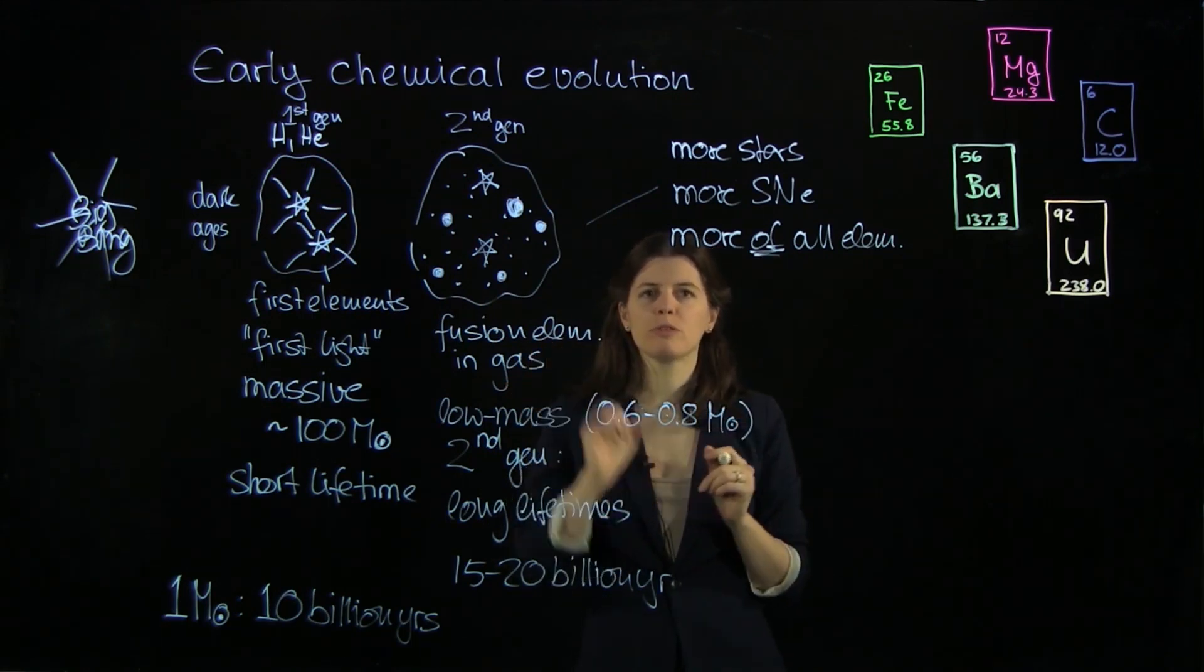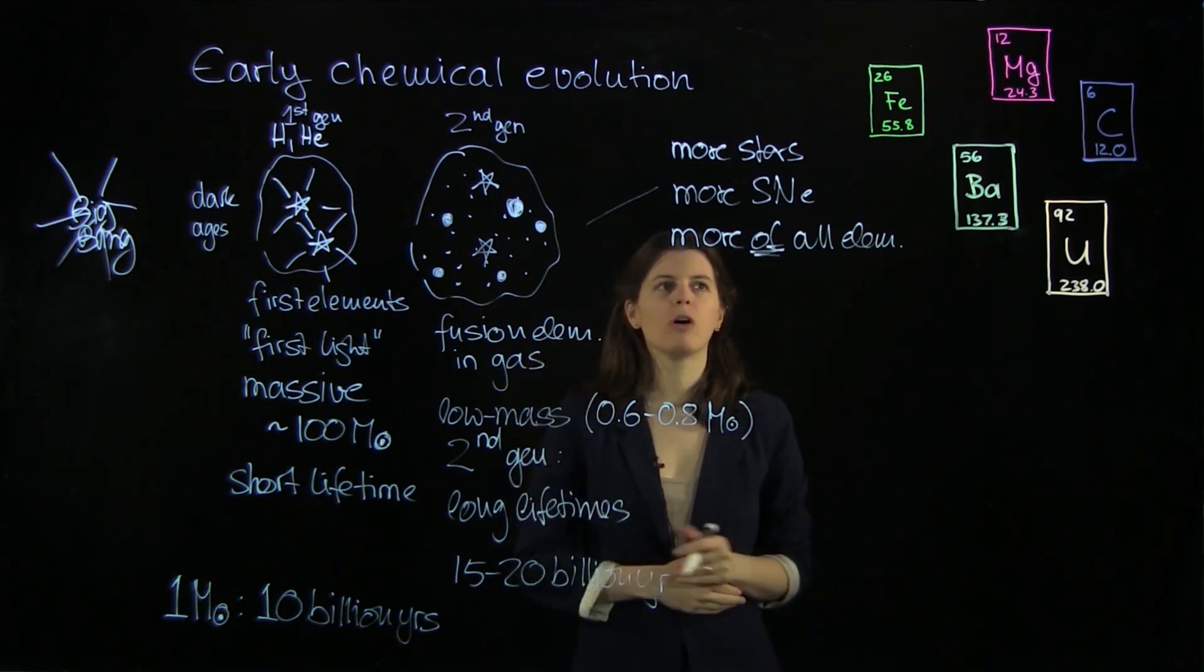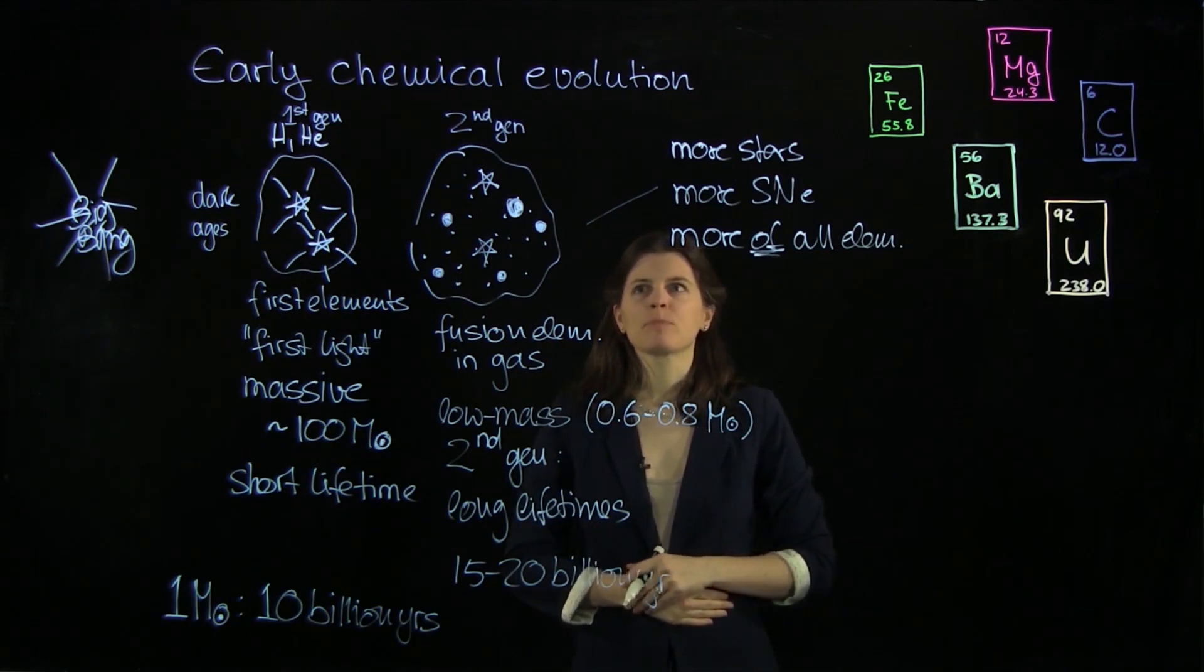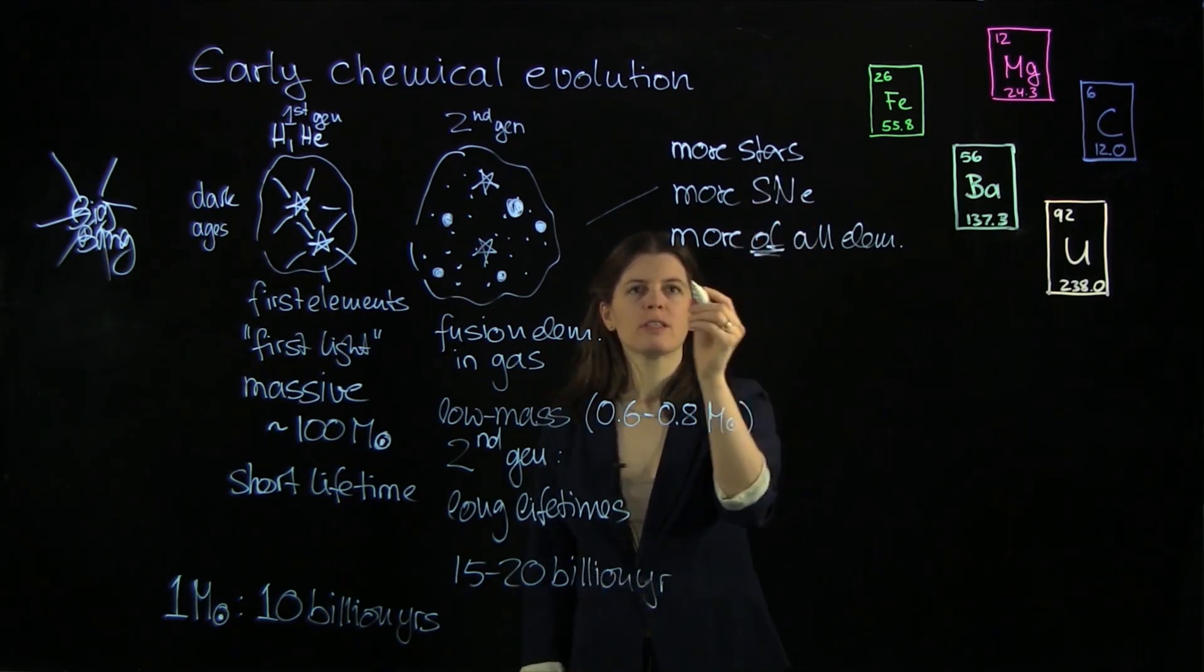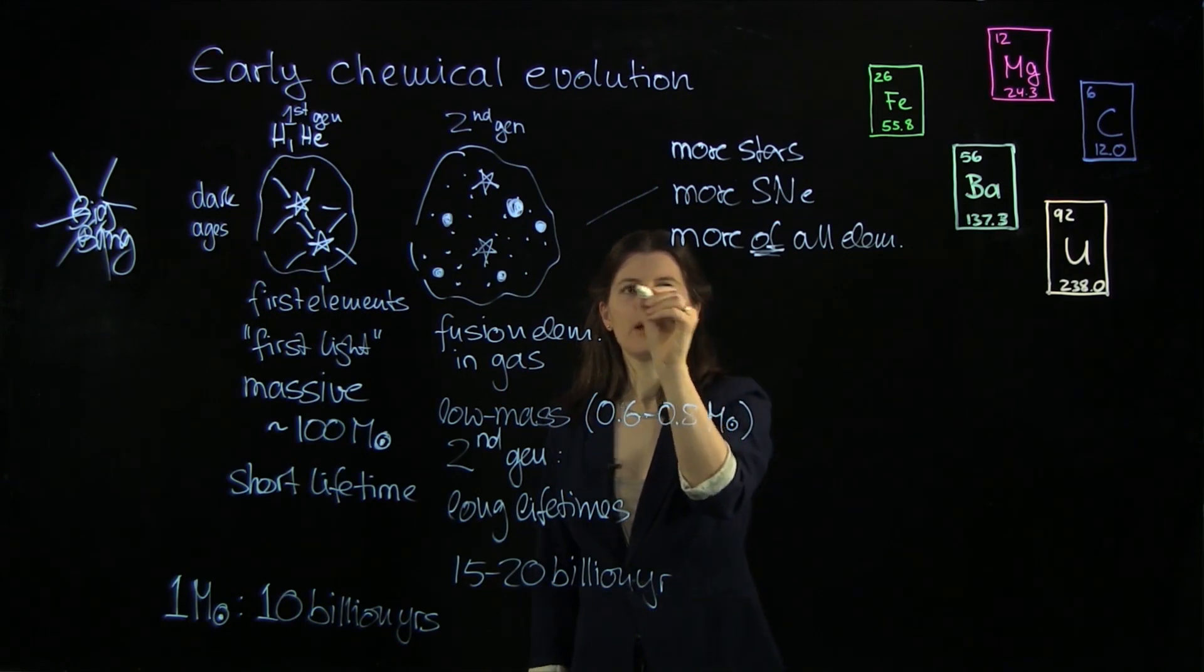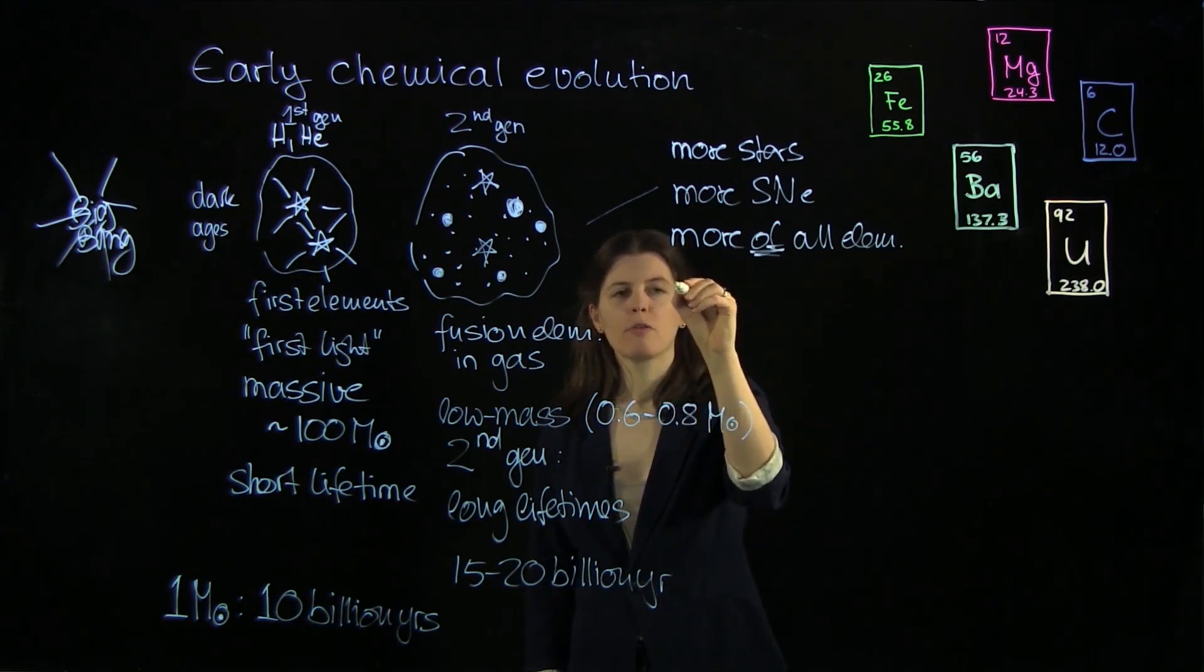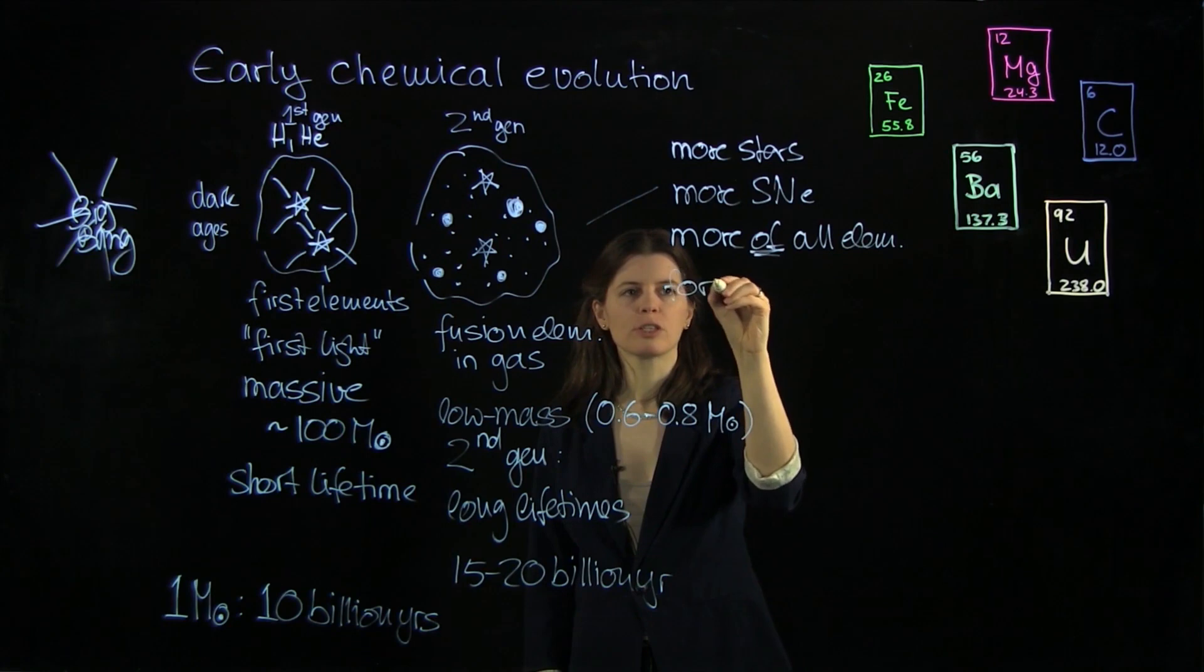Everything was produced from early on and then just more and more often. And so we have more stars and more chemical enrichment but also the formation of the first bigger structures.